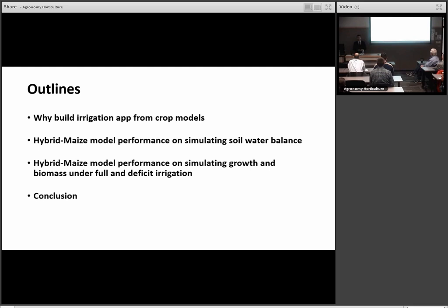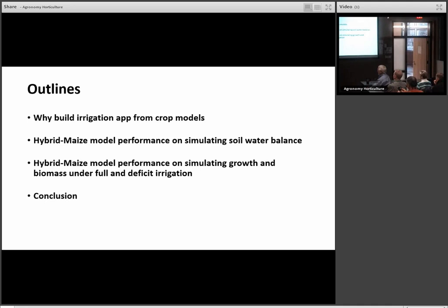First, I'm talking about why we want to build this irrigation app from crop models. Then there's two parts, which is the main content and experiments. The first is we want to test the performance of the hybrid-maize model on simulating soil water balance, and also test the performance of this model on simulating the growth and biomass under full and deficit irrigation conditions. And at the end, I will give a conclusion.